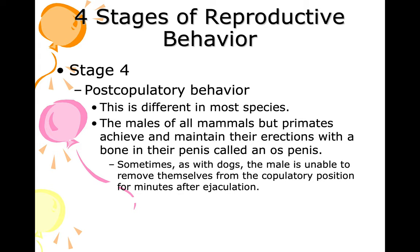Post-copulatory behavior is stage four, and this is different in most species. The males of all mammals but primates achieve and maintain their erections with a bone in their penis called an os-penis — 'os' means bone. Sometimes, as with dogs, the male is unable to remove himself from the copulatory position for minutes after ejaculation. The animal with the largest os-penis is the walrus.